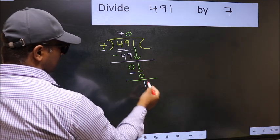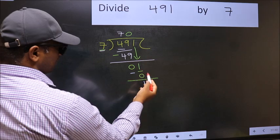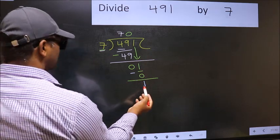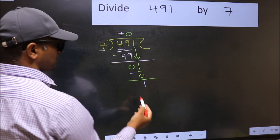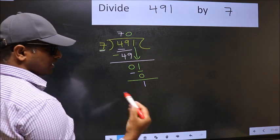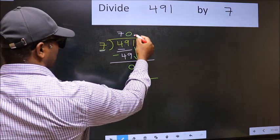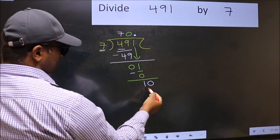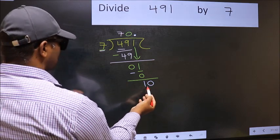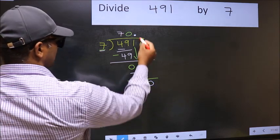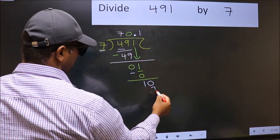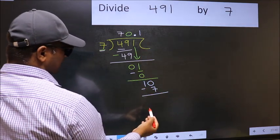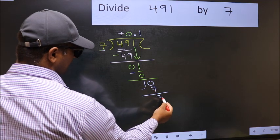Over here, we did not take any number down, and 1 is smaller than 7. So now you can put dot and take 0. So we have 10. A number close to 10 in the 7 table is 7 — 7 once is 7. Now subtract: 10 minus 7 is 3.